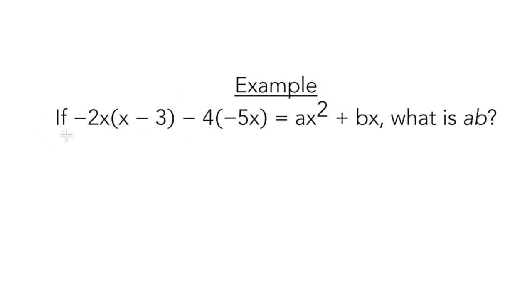So let's look at this example here. If negative 2x times x minus 3 minus 4 times negative 5x equals ax squared plus bx, what is ab? We need to figure out what these constants are. So I know your instinct is, I want to isolate for a and b. Don't think of it like that. Anytime you're working with more than two variables, you want to think of this as two separate equations.